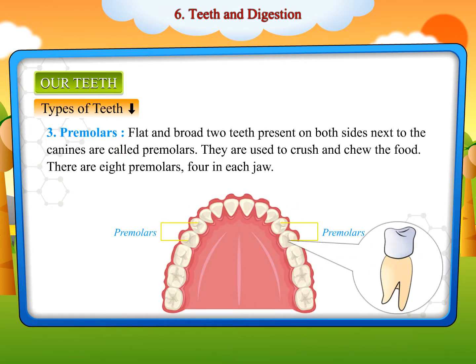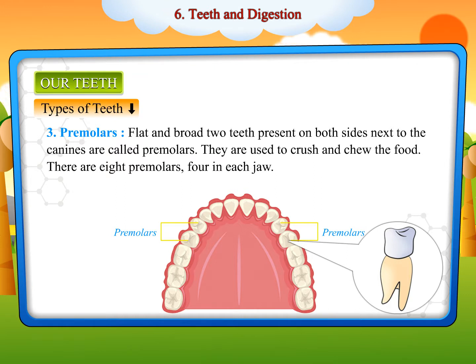Premolars are flat and broad teeth present on both sides next to the canines. They are used to crush and chew the food. There are eight premolars, four in each jaw.